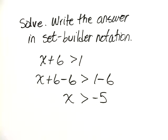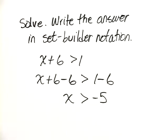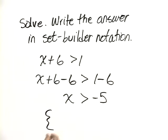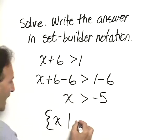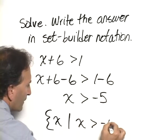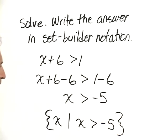So to write the answer in set builder notation, we write it as the braces x such that x is greater than negative 5, and then we close the braces.